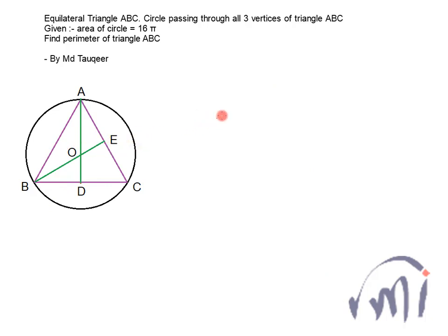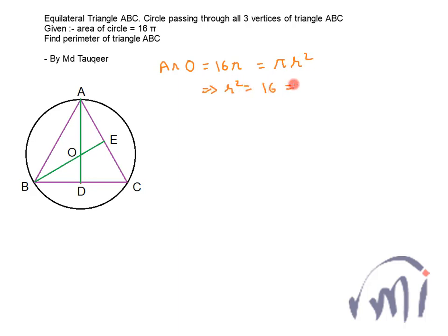To recap the first method: to draw the circumcircle, we draw perpendicular bisectors of at least two sides. Since it is an equilateral triangle, these perpendicular bisectors also act as medians. The radius of the circumcircle is AO — the distance from center O to any vertex. Since the area of the circle is 16π = πR², we found R² = 16, so R = 4, meaning AO = 4.